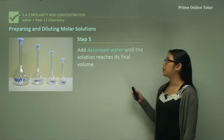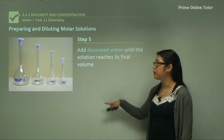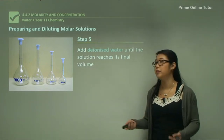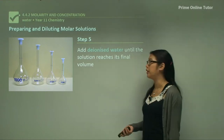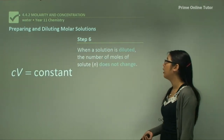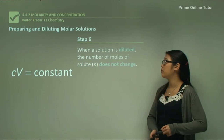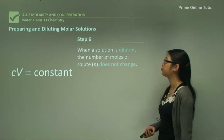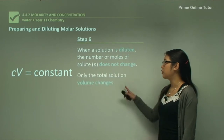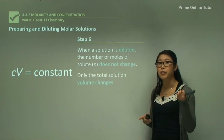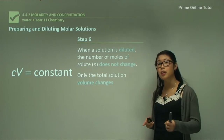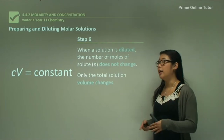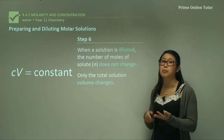Add deionised water until the solution reaches the final volume — the engraved line — which marks 100, 250, 500, or 1 litre. When the solution is diluted, the number of moles of solute doesn't change; only the total solution volume changes. We initially had a strong concentration in a small beaker, then transferred it to the volumetric flask and filled it up, thereby diluting it.